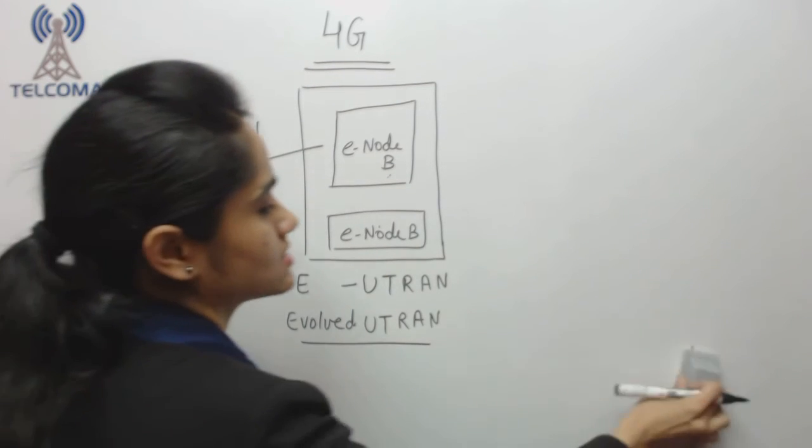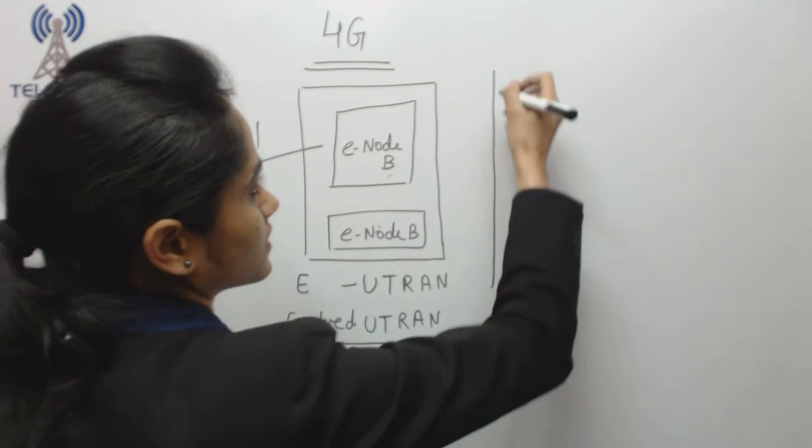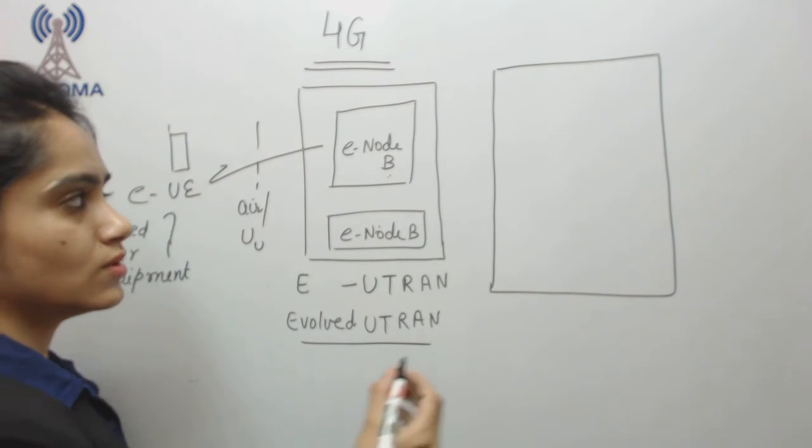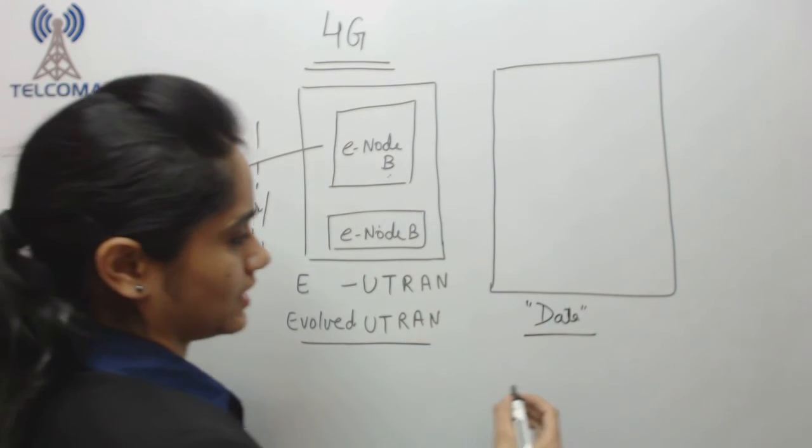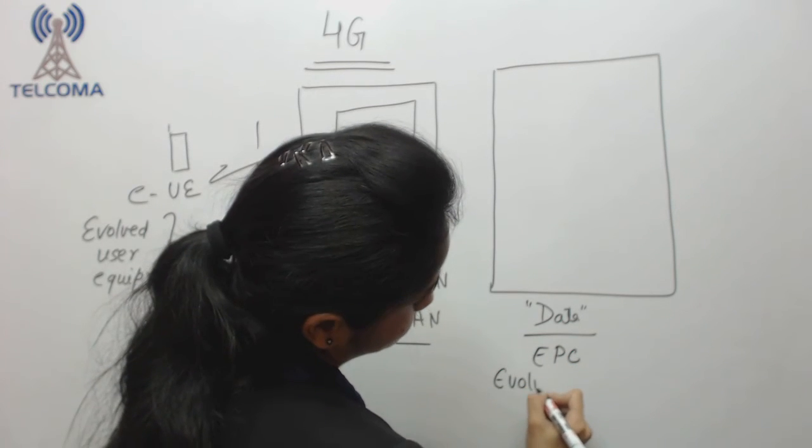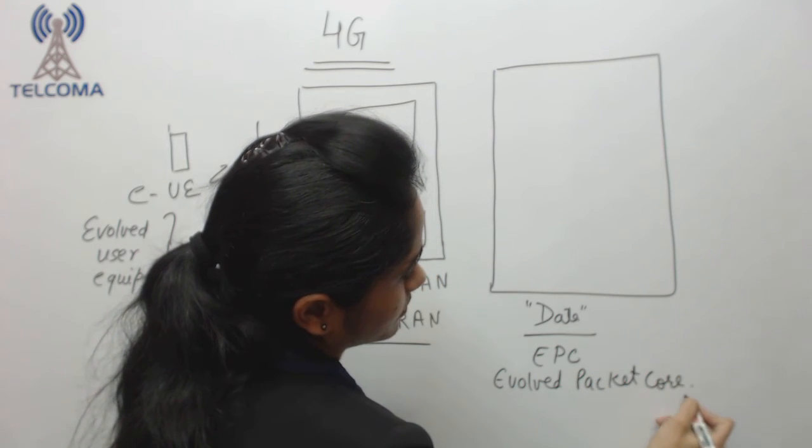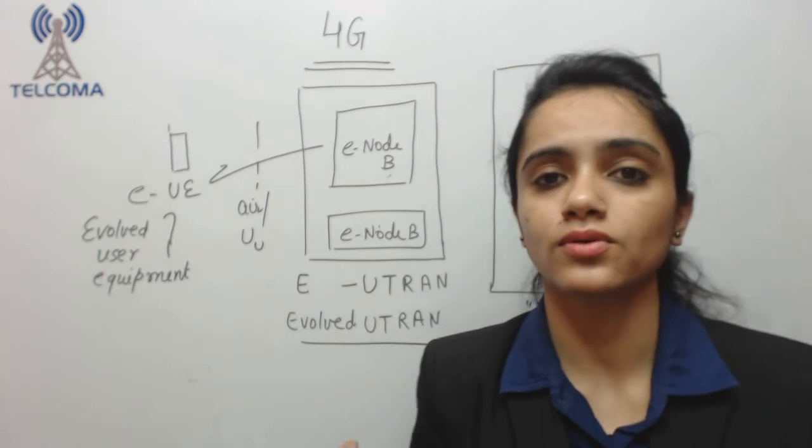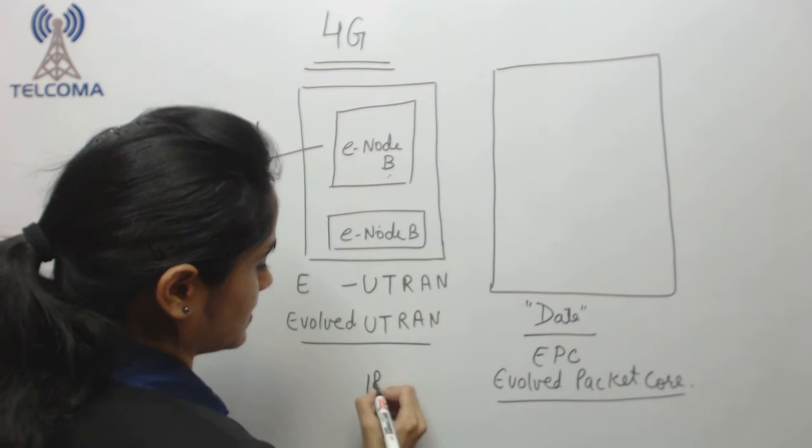If we talk about this as a core network, so core network we will form here data only, so we call it as EPC, EPC as evolved packet core, because we have evolved a new core network in 4G. We are not going to use the 2G core or 3G core, we are evolving a new core which is completely IP based because this 4G is IP based technology and this core is attached to the external network.